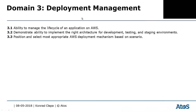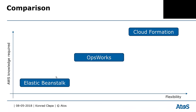Domain 3 is about deployment management — the ability to manage the lifecycle of applications on AWS. We need to demonstrate the ability to implement the right architecture for development, testing, and staging environments. Basically we'll be looking at three technologies: Elastic Beanstalk, OpsWorks, and CloudFormation.